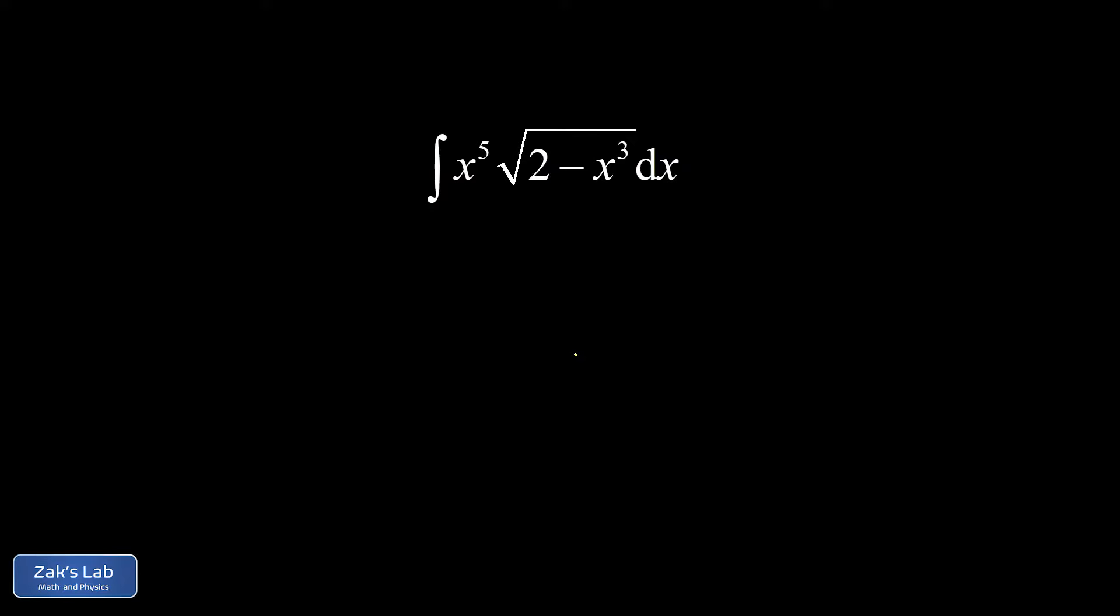They require an explicit u-substitution, but they also require a coincidence, so things work out really conveniently without being able to see in advance that it's going to work out conveniently. When you see an integral like this, the first thing you try is to let u be the interior of the square root.